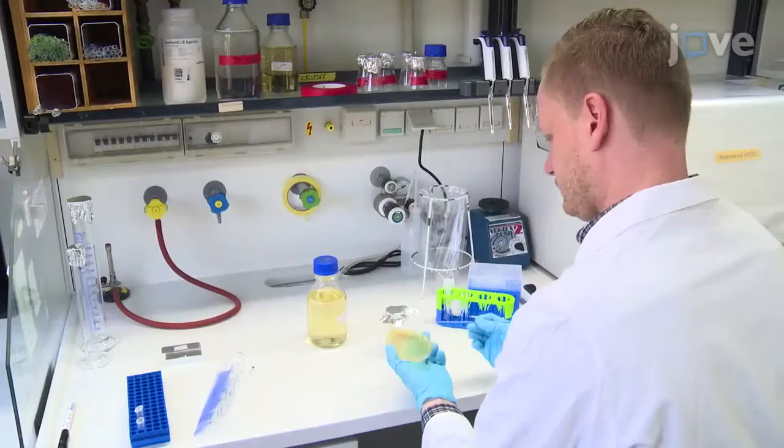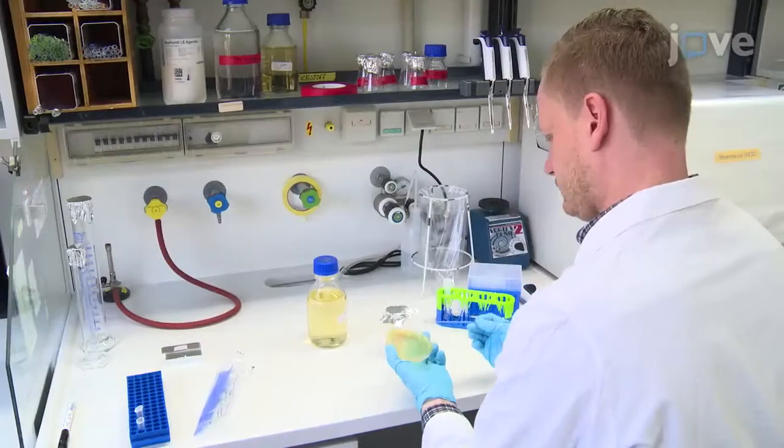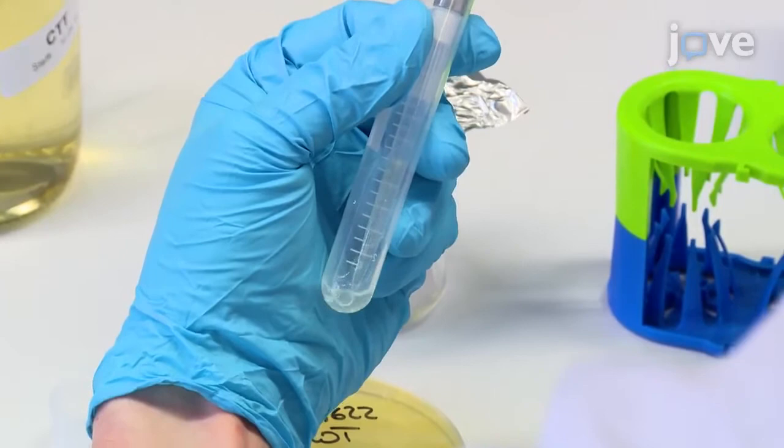To begin, re-suspend a single M. xanthus colony in 500 microliters of 1% CTT supplemented with antibiotics in a sterile tube and transfer the entire suspension to a 50 mL Erlenmeyer flask containing 5 mL of 1% CTT.